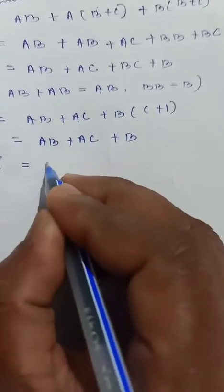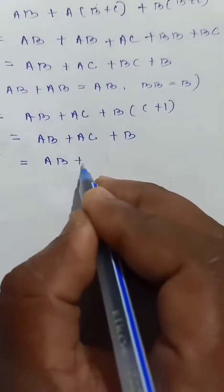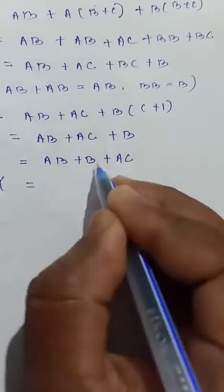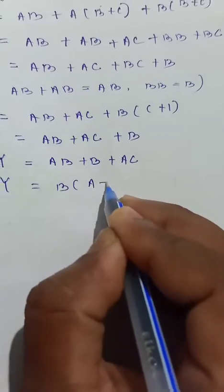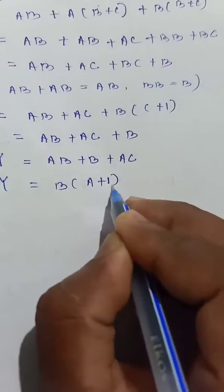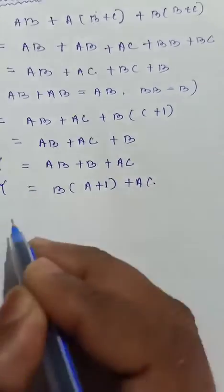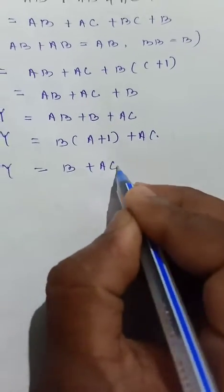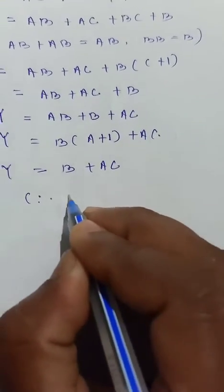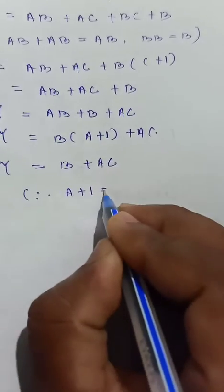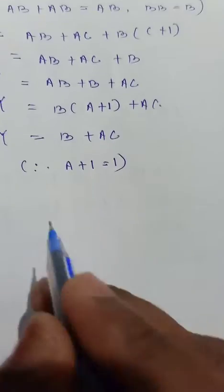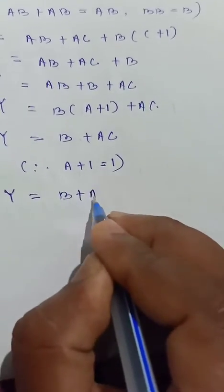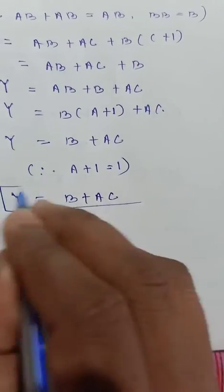Now, y is equal to ab plus b plus ac. Taking b common: b(a plus 1) plus ac. So y is equal to b plus ac, using 1 plus a is equal to 1. Therefore, y is equal to b plus ac.